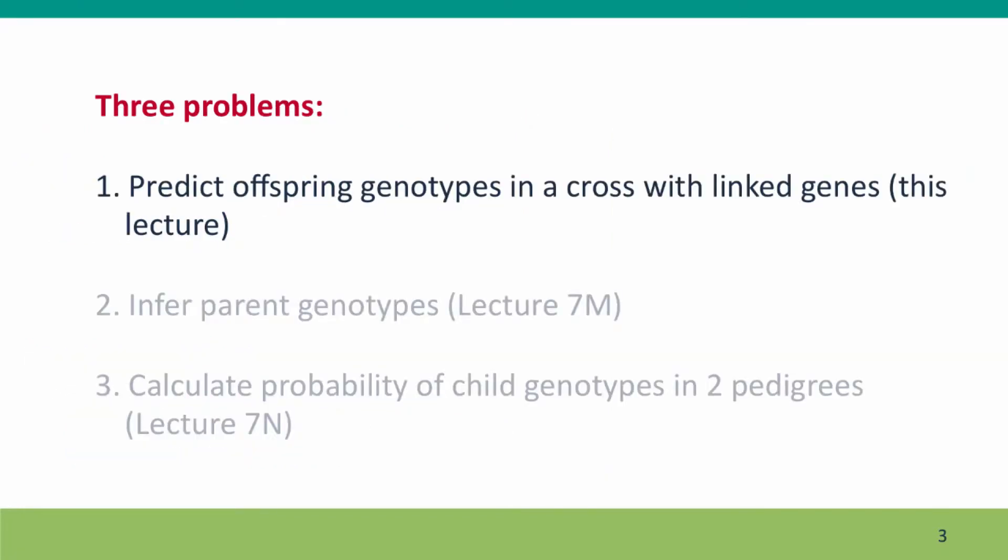Our first problem has us predicting the offspring genotypes in a cross where we're considering two linked genes, so we have to consider the effects of crossing over. In upcoming lectures, we'll work on thinking backwards from the genotypes of the offspring to the genotypes of the parents, and we'll do the first of a number of problems where we consider events in a single family, using pedigree drawings to guide our thinking.